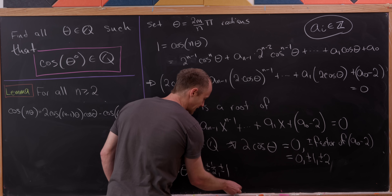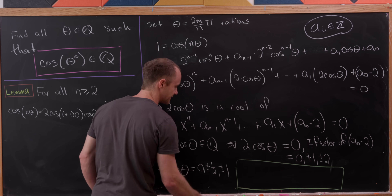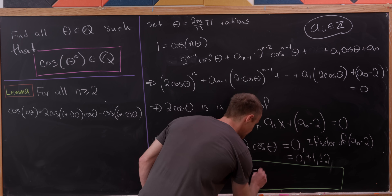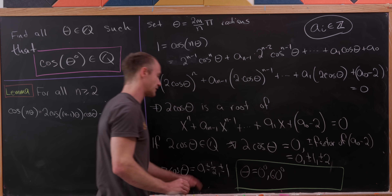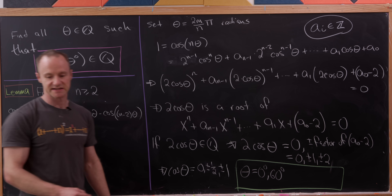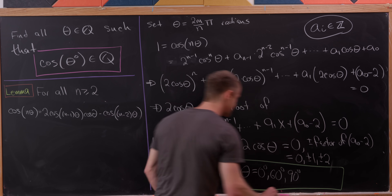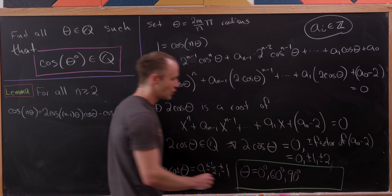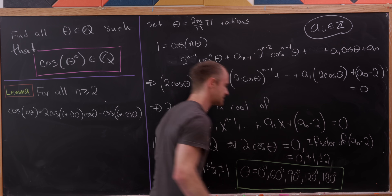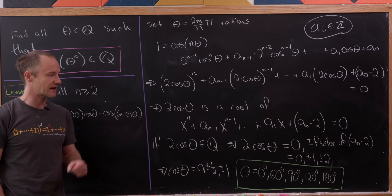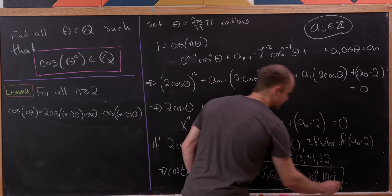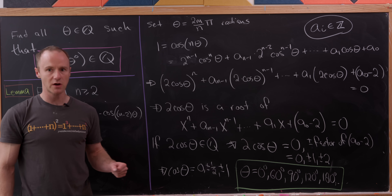We know exactly where these occur in degrees. The valid angles are: 0° (cos = 1), 60° (cos = 1/2), 90° (cos = 0), 120° (cos = −1/2), 180° (cos = −1), and so on. As we can see, the original question is quite restrictive — we only get a handful of well-known, commonly seen angles.